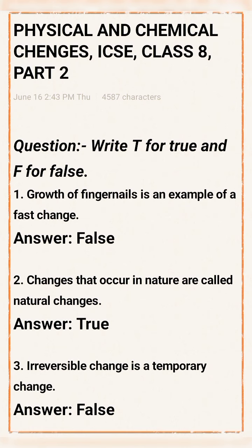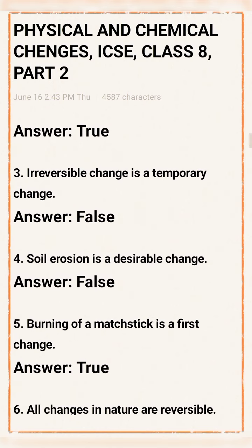First, write T for true and F for false. Statement 1: Growth of fingernails is an example of a physical change — that statement is false. Next: Changes that occur in nature are called natural changes — this statement is true. Next: Irreversible change is a temporary change — this statement is false.